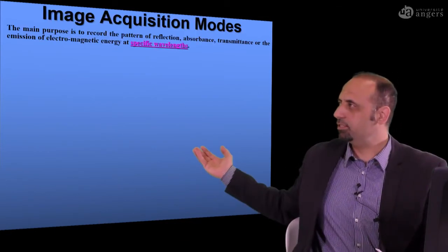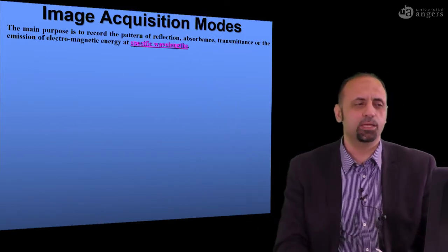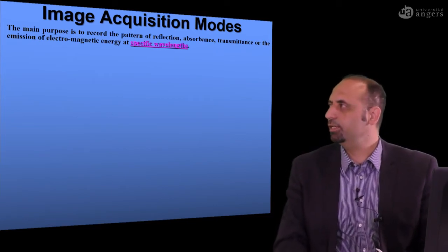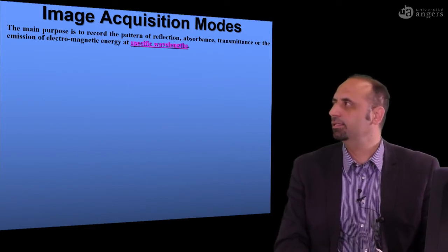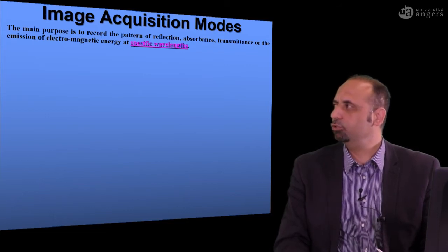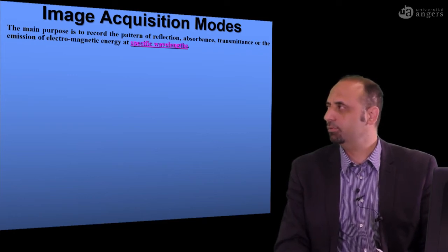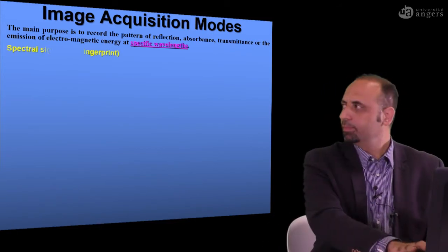For image acquisition mode for both systems, we need to acquire images to get an impression about the amount of light that could be reflected, absorbed, transmitted, or emitted from food. We can then interpret this emitted, reflected, or transmitted light at specific wavelengths as a spectral signature, and this spectral signature can be used to evaluate the overall quality of a food specimen.